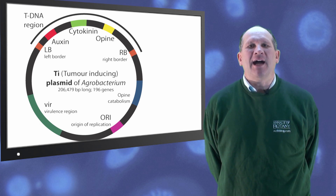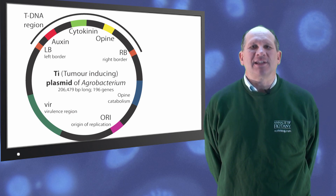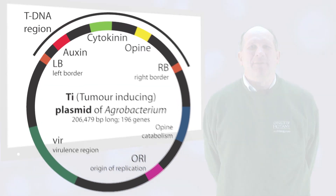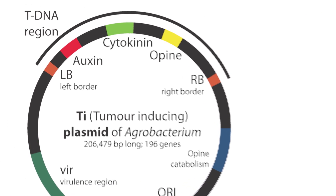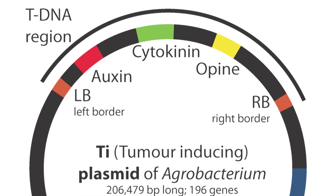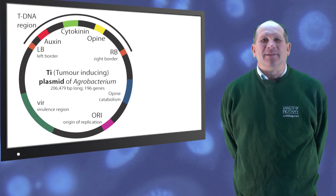These genes are located in a circular molecule present in the wild type Agrobacterium tumefasciens known as T37, on the Ti plasmid. It is some 206,000 base pairs long, and the part that's transferred into the nuclear DNA of the carrot is known as the T-DNA. It contains the genes which make the hormones that induce the plant cells to divide.